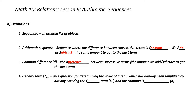The final definition we want to cover is the general term. We use something called T to the N to represent this. It is basically an expression for determining the value of a term, which has already been simplified by entering the amount of the first term and the amount for the common difference.